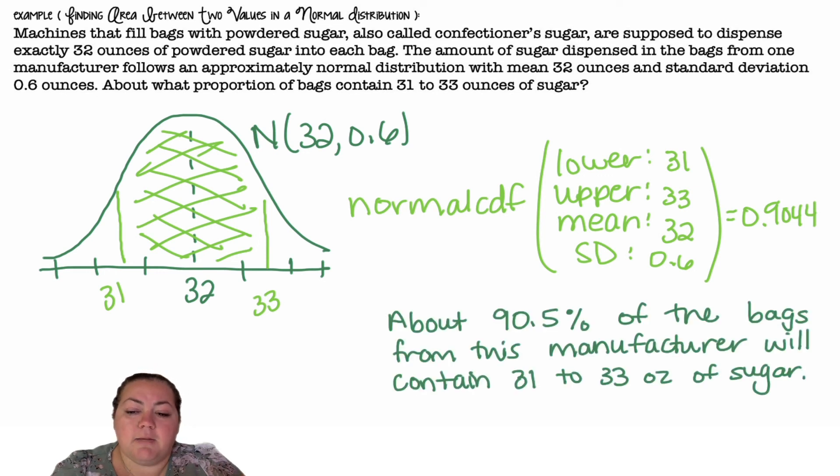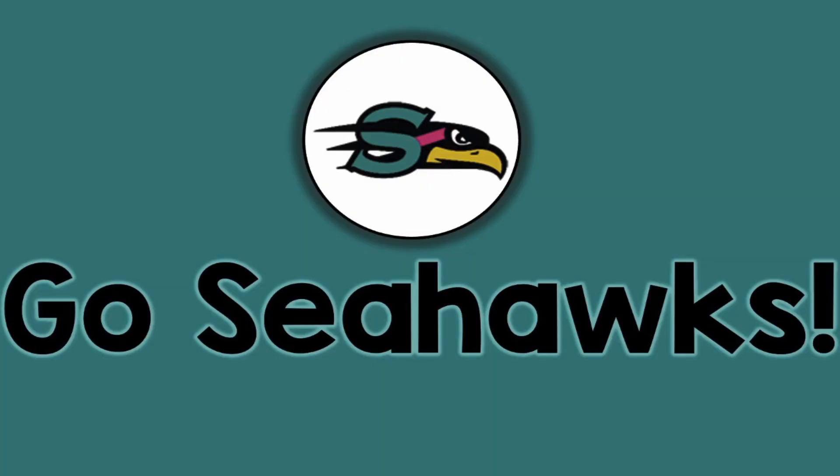Alright, so about 90.5% of the bags from this manufacturer will contain 31 to 33 ounces of sugar. Alright, go Seahawks!